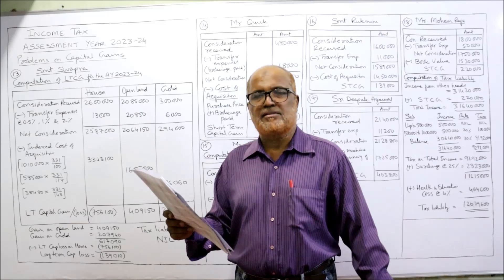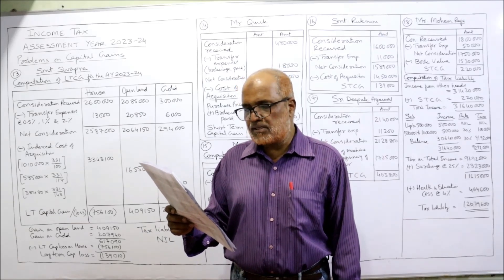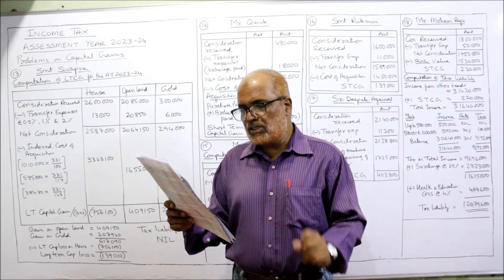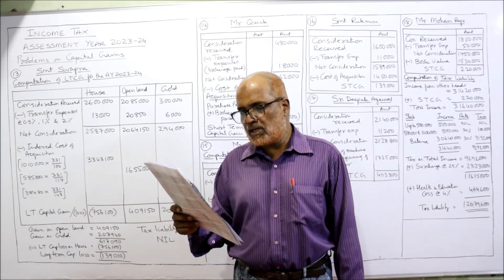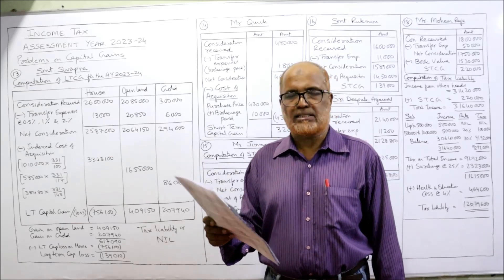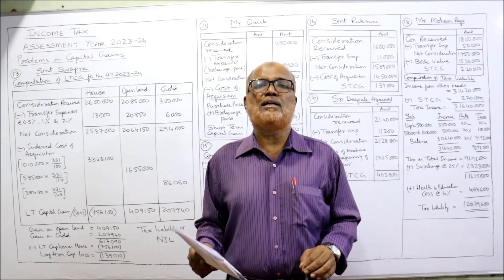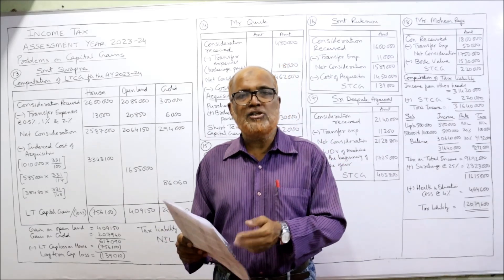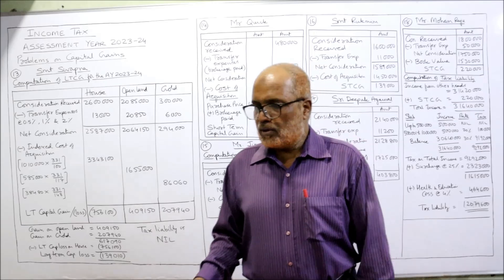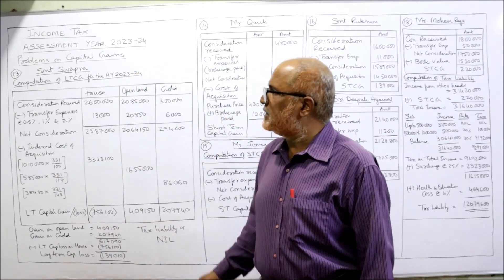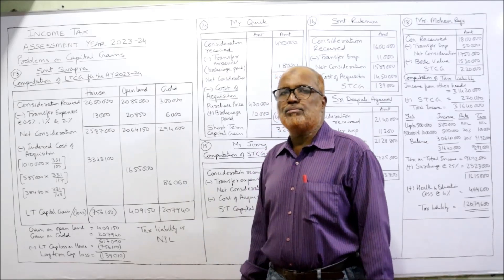Purchase price and sale consideration are given for all three assets. Transfer expenses are 0.5% for house, 1% for open land, and 2% for gold. The Cost Inflation Index values are: 2005-06: 117; 2009-10: 148; and for the current previous year 2022-23: 331. For the house purchased before 1st April 2001, the base year index is taken as 100. These CII values are not given in the problem — you must remember them.